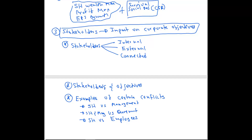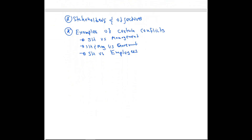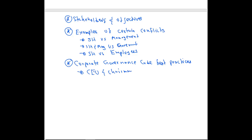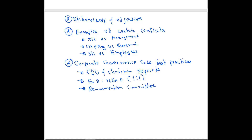Next, you should know corporate governance code and best practices. There are certain best practices companies should follow. For example, the CEO and chairman roles should not be held by the same person — they should be separate. For an established organization, the ratio of executive directors to non-executive directors should be one-to-one. There should be a remuneration committee rather than allowing executive directors to decide their own salaries. And it is always better to have an audit committee, with at least one person with strong financial knowledge.